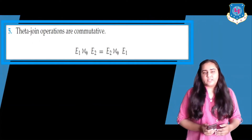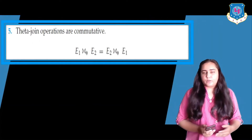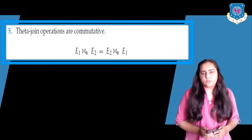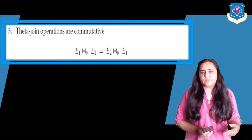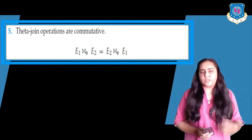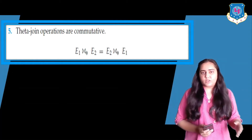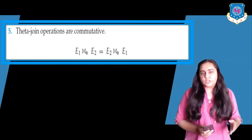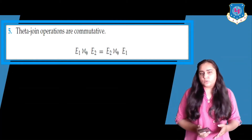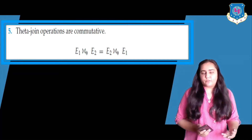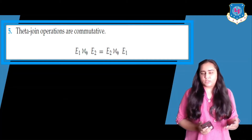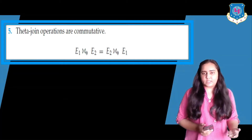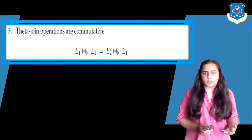The fifth rule is that theta join operations are also commutative. If you have E1 theta join E2, you can also perform E2 theta join E1 and you would still get the same result.